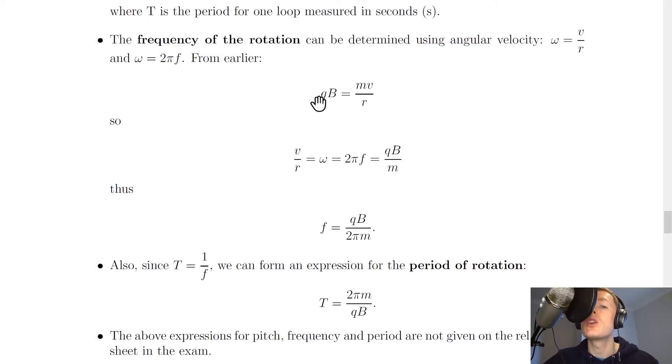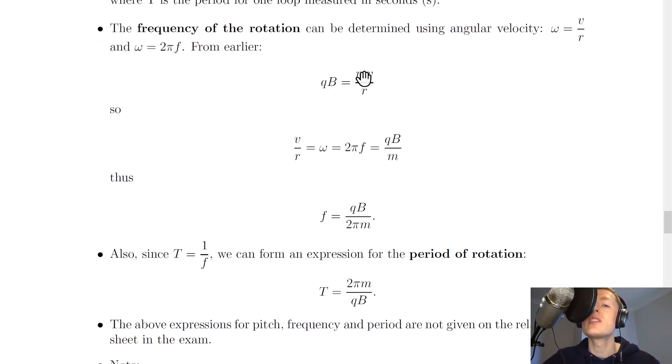So if we do that, we get qvB equals mv squared over r, and then if we cancel out a v, we end up with qB equals mv over r. And you'll notice that we've got this v over r expression in the fraction here, but we can also come up with an expression for v over r in terms of omega. So we've said here that v over r is equal to omega, but omega is also equal to 2 pi f from this equation. So we can say that v over r is equal to omega, which is also equal to 2 pi f, is equal to qB over m. Since we've got this qB on the left here, and we can just divide by m there. So we've got 2 pi f equals qB over m.